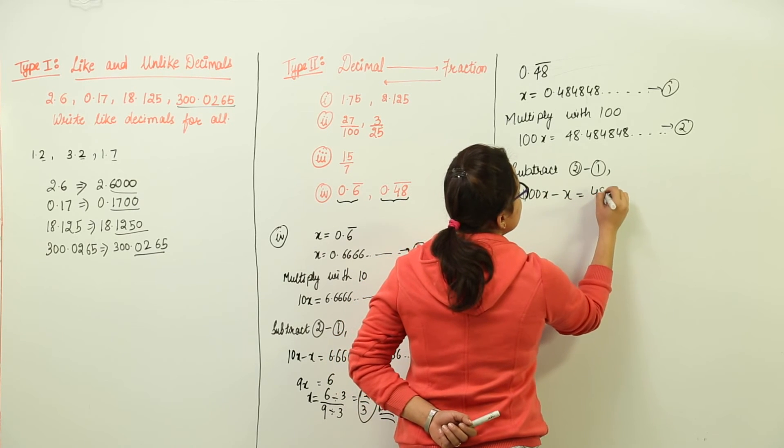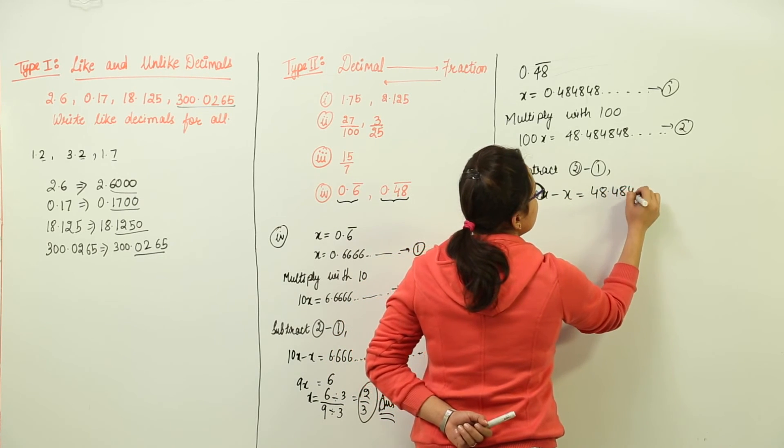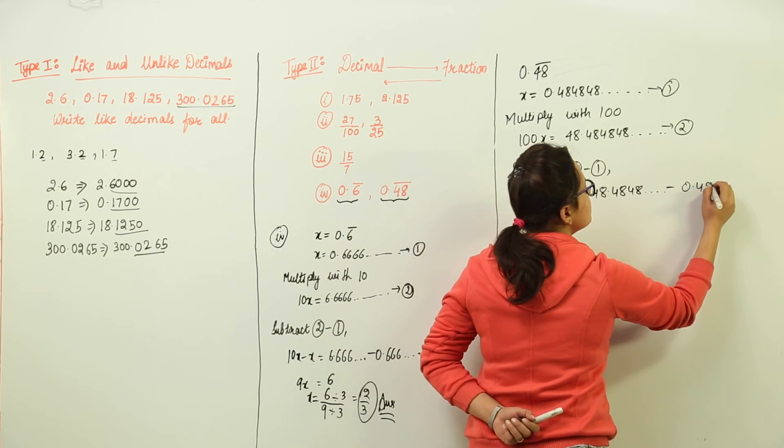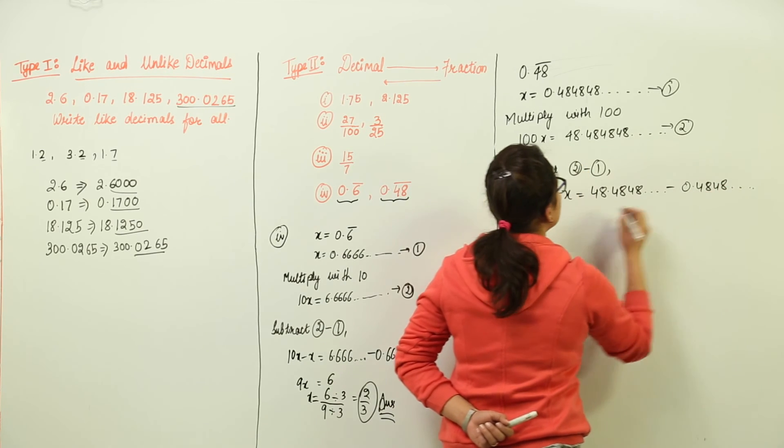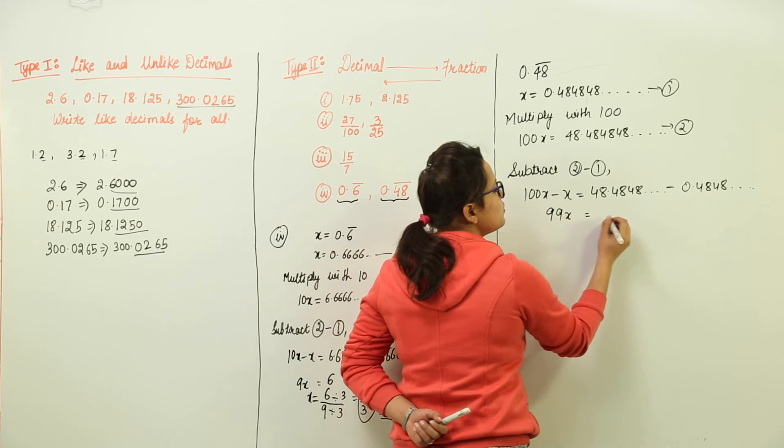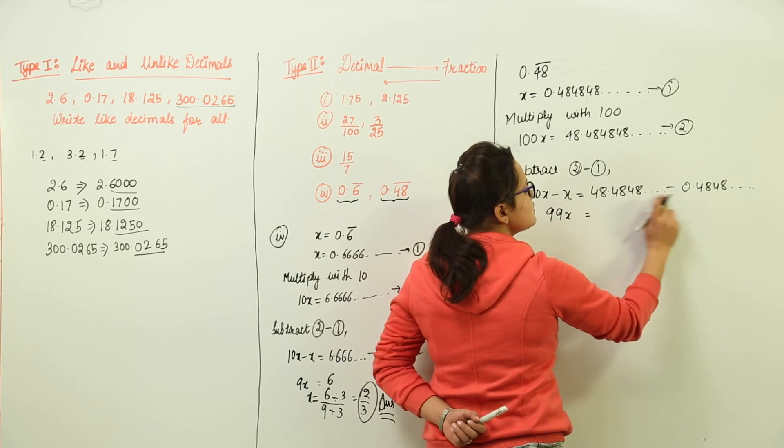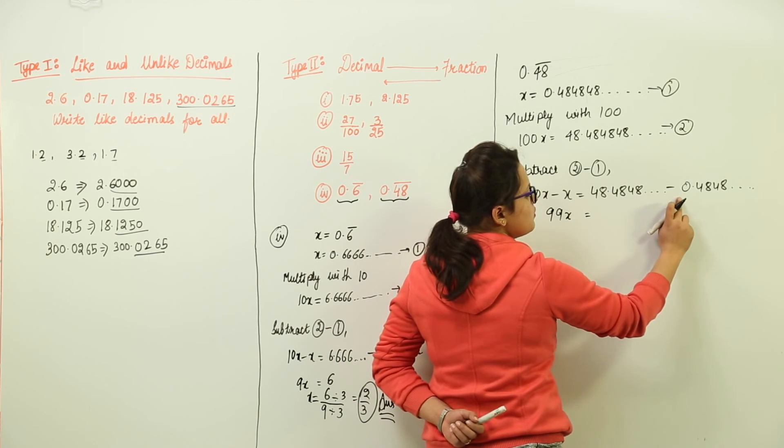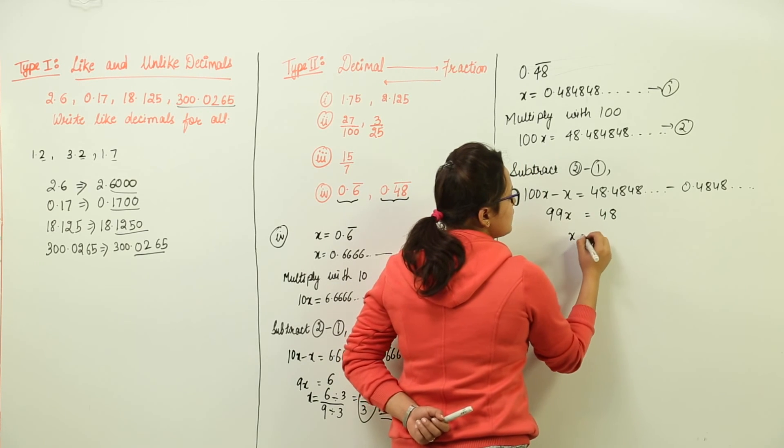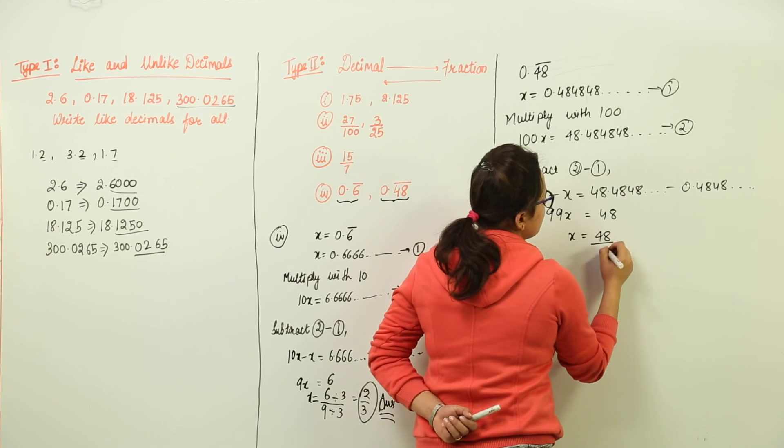we would get 100x minus x, that would be equal to 48.4848 so on, minus the right hand side that was 0.4848 and so on. So on the left hand side we get 99x equal to 48 minus 48.48 and so on, minus 0.48 that is 48 only. Now x comes out to be 48 upon 99.